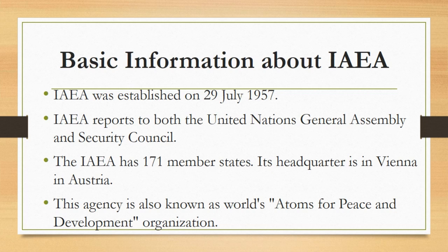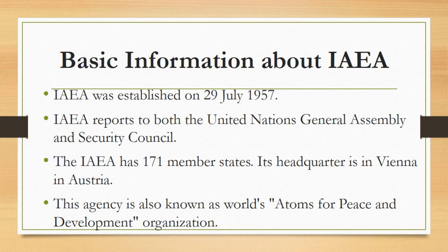Basic information about IAEA, i.e. International Atomic Energy Agency. This agency was established on 29th July 1957, though established independently of the United Nations through its own international treaty. The IAEA reports to both the United Nations General Assembly and Security Council. It has 171 member states, its headquarters is in Vienna, Austria, and regional offices are located in Geneva, New York, Tokyo, and Toronto. This agency is also known as the World's Atoms for Peace and Development Organization. The main purpose of this agency is to promote the peaceful use of nuclear technology.